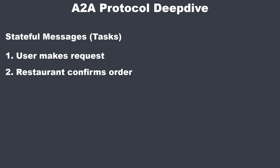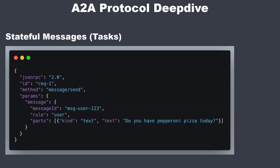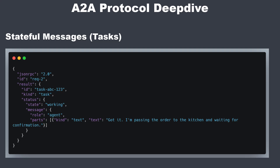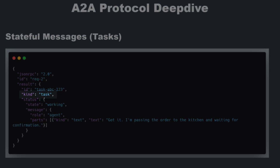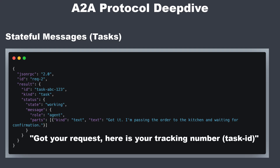But the real order is more complicated — the kitchen has to confirm the order, and maybe an ingredient is out of stock. This is where we need stateful communication using the task object. The customer's request is now a real order, for example 'I'd like a pepperoni pizza.' The message send call looks almost the same, but this time the restaurant agent responds differently because it can't give an immediate confirmation. The response shows kind is task, and the status has a state with a value of working — a task object with a task ID. It's saying: I received your request, here is your tracking number, I'll remember the state and get back to you.